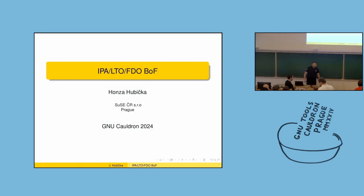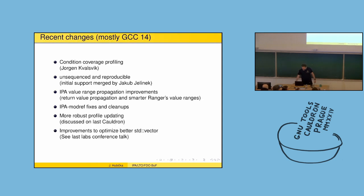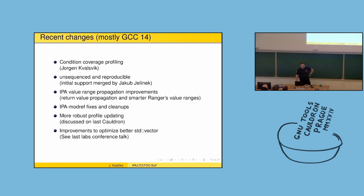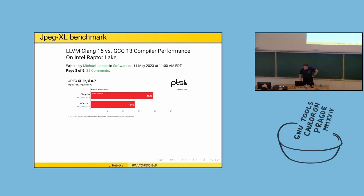Welcome to the BOF. I made a couple slides. These are recent changes mostly in GCC 14: we had condition coverage and unsequenced by Jakub which is only on trunk, value range propagation improvements, modref improvements, and I spent a lot of time working on the CTD vector which was an interesting discovery. It turned out to be much slower than Clang on JPEG XL.